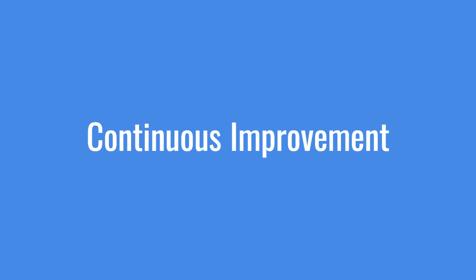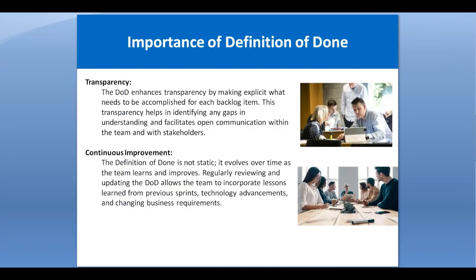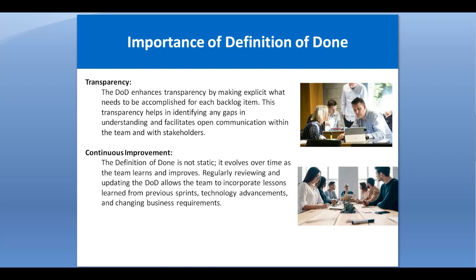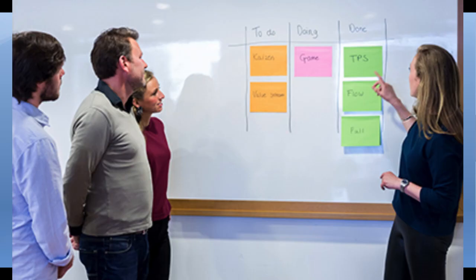Continuous improvement means the Definition of Done evolves over time as the team learns and improves. Regularly reviewing and updating the Definition of Done allows the team to incorporate lessons learned from previous sprints, technology advancements, and changing business requirements. For example, if in one sprint the Definition of Done was that a transaction should be completed within three seconds, in the second sprint that becomes an established criterion, creating a scenario of continuous improvement.